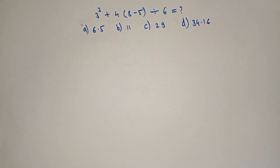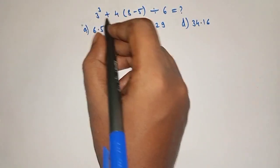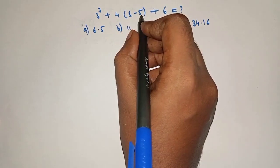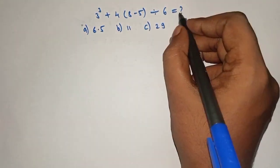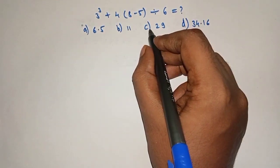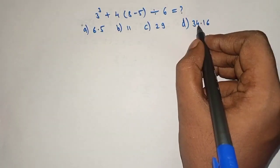Hello friends, welcome to AHA Math. 3 raised to 3 plus 4 into, under the bracket, 8 minus 5 divided by 6 is equal to what? Option A: 6 into 5. Option B: 11. Option C: 29. Option D: 34 into 16.